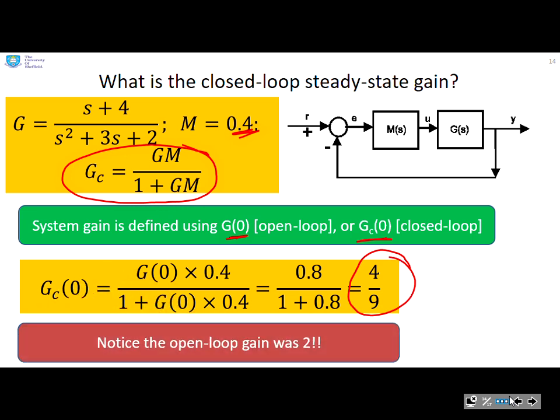Now, notice again, this is very different from the open loop gain, which in this case was 2.